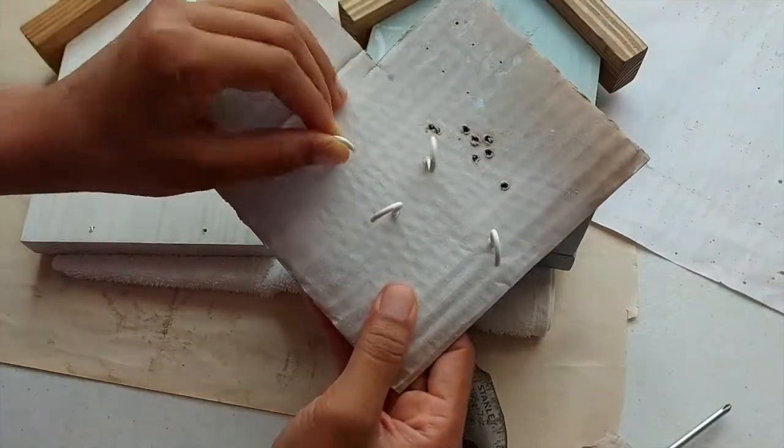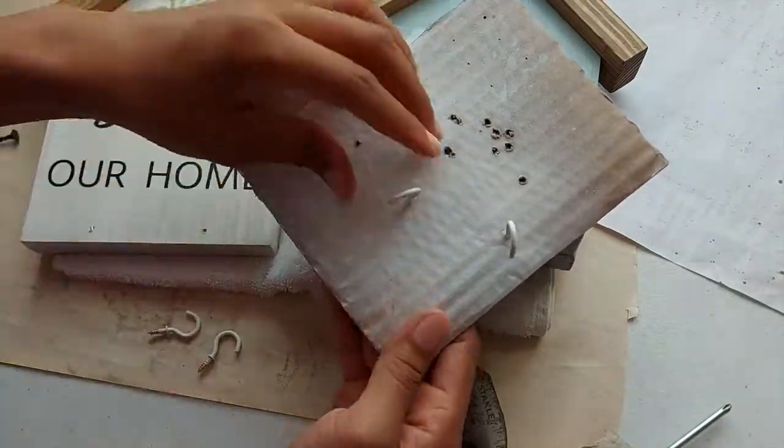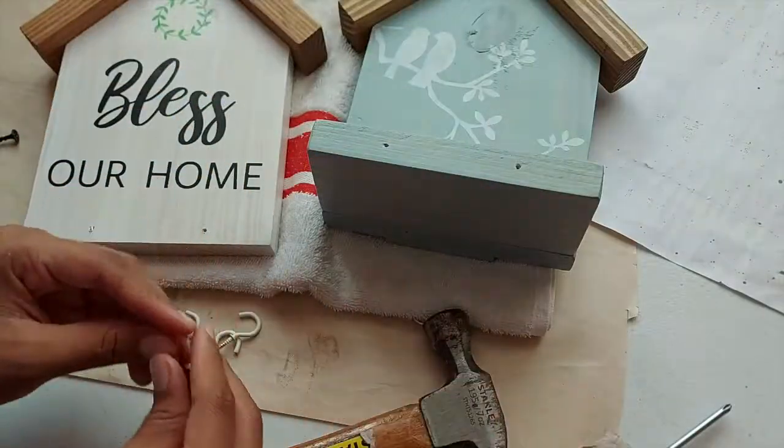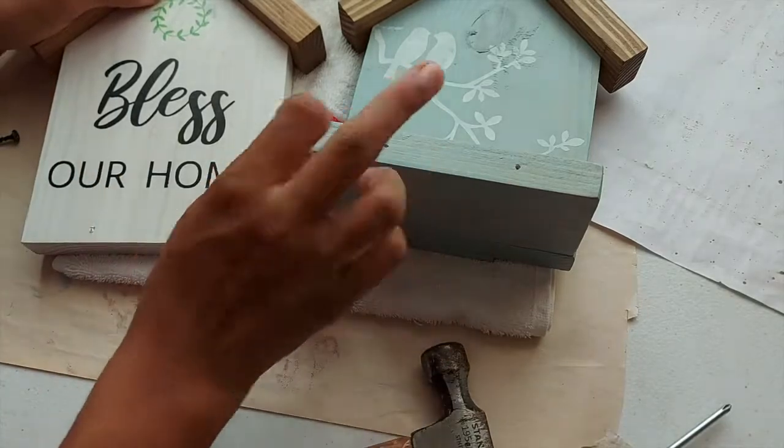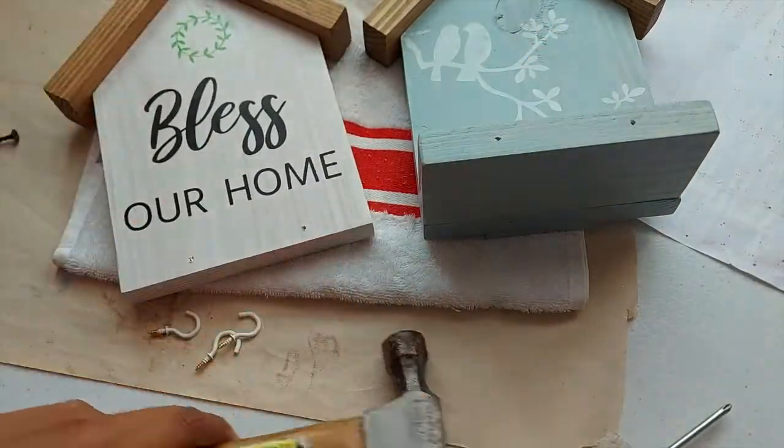And finally the last step is for me to put on the hooks. Now I have these gold hooks that I spray painted white and I'm just going to screw them in to the front of the sign.